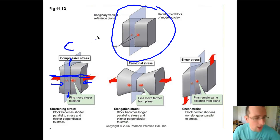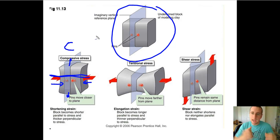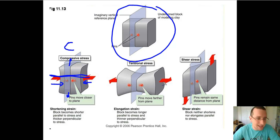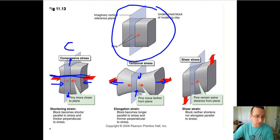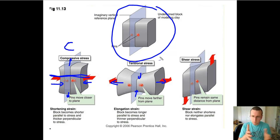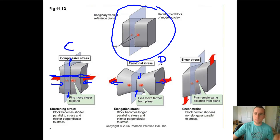Then you also have tensional stress, which happens when you stretch the object. In that case, parallel to the line of the stress, you're going to have stretching taking place, but perpendicular to the stress, it's actually going to shorten the object. And that's what actually happens in the case of divergent boundaries, for example, when the plates are moving away from each other.